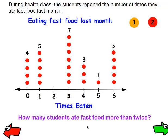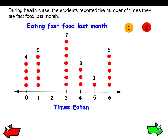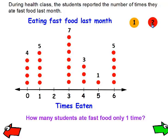So how many students ate fast food more than twice? Well, these people didn't eat fast food at all, these people ate once, and nobody ate twice — but all of these people ate fast food more than twice. If you add 7 plus 3 plus 1 plus 5, you would have 16 students who ate fast food more than twice. How many students ate fast food only one time? These people ate fast food only one time, and there are 5 of them.